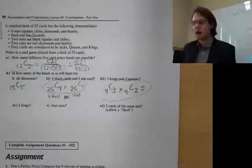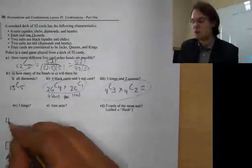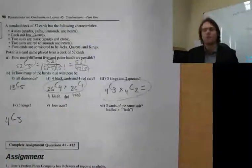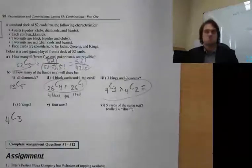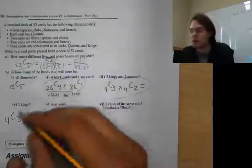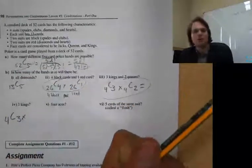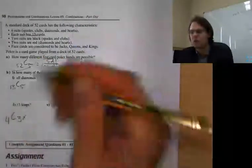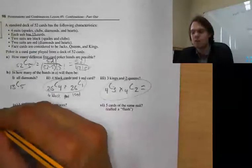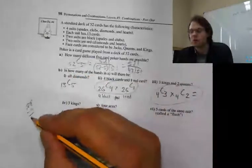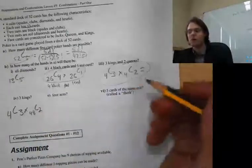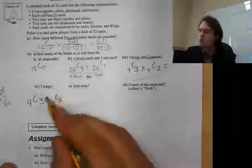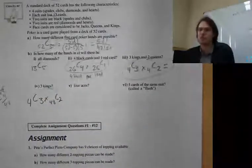Now: 3 kings in a 5-card hand. That's 4 choose 3. The remaining 2 cards can be anything except kings, so there are 52 minus 4 equals 48 other cards. So we also have 48 choose 2. Multiply those together and that tells you how many ways you can get exactly 3 kings regardless of what else you get.